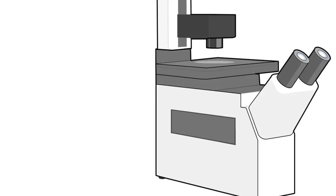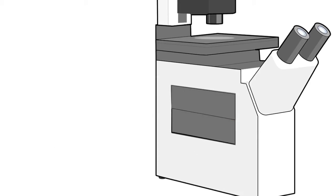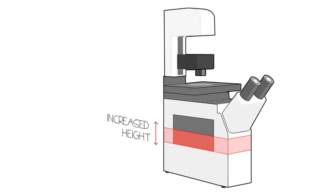With current inverted microscopes, the user typically adds photomanipulation devices by stacking components onto the microscope. This stacking method increases the height of the objective and the sample.